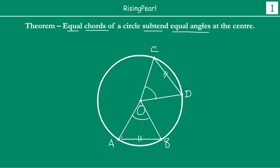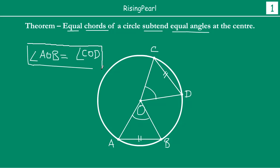The angle subtended by chord AB at O is angle AOB. Similarly, the angle subtended by chord CD at O is angle COD. The theorem is telling us that if these two chords are equal in length, then these two angles are equal. So this is what we have to prove: if equal chords, then equal angles subtended at the center.